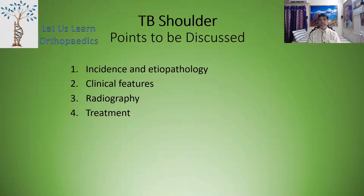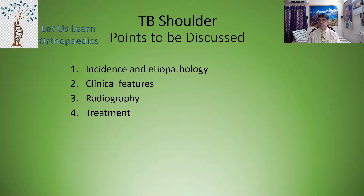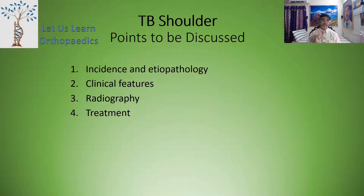Dear students, today we are going to discuss mainly the tuberculosis of the shoulder joint, and along with that we will also be discussing the tuberculosis of the ankle joint, tuberculosis osteomyelitis, and the tuberculosis of the short tubular bones. The points to be discussed in TB shoulder include the incidence and etiopathology, clinical features, radiography, and treatment.